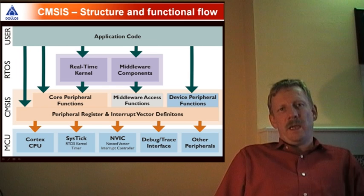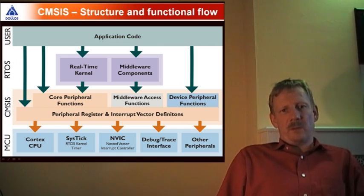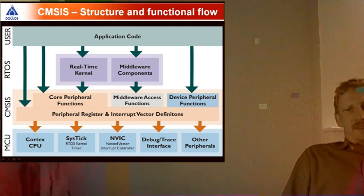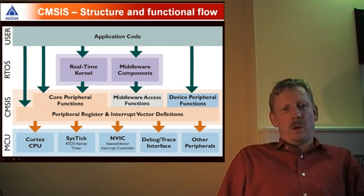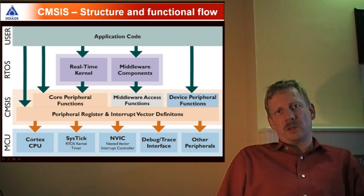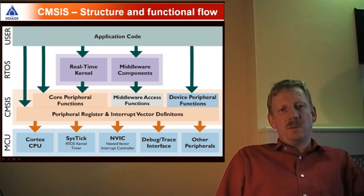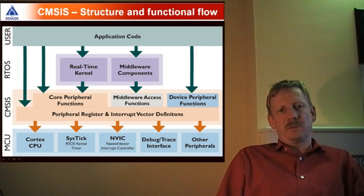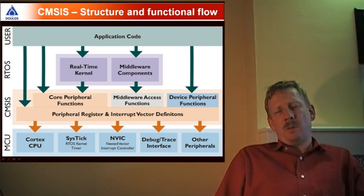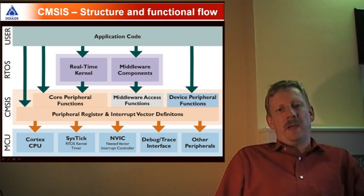CMSIS gives us a way to access these registers and peripherals with clear definitions. We can set up core peripheral functions, middleware access functions, and device peripheral functions on top of that layer. Above this, we can write independently of the actual hardware — our real-time kernel and middleware components, which can be exchanged independently of the semiconductor's hardware implementation. This gives software developers the opportunity to write application code for Cortex-M devices without needing to know exactly the hardware implementation, making it much easier to swap the actual hardware device independently of the vendor's Cortex-M3 implementation.